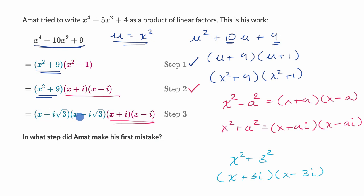But what we see over here is Amat took the square root of 3 instead of just having a 3 here. Amat treated it, instead of having a 9 here, as if we actually had a 3. So they made a little bit of an error there. So this is the step where Amat makes his first mistake. And we're done.